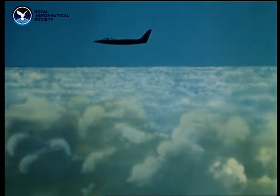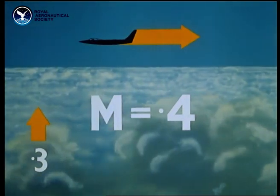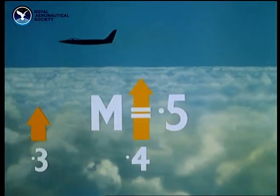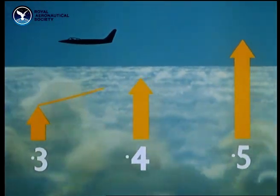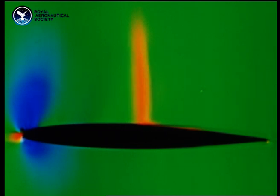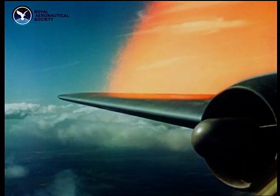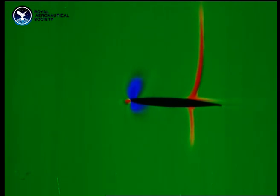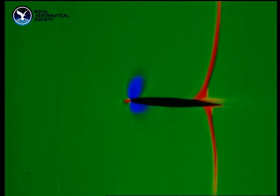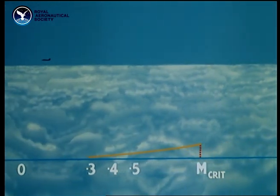The first shock stall trouble is a sharp rise in drag. At speeds below Mcrit, drag is roughly proportional to the square of the speed. But when shock waves develop, they cause a much greater rise in drag, for the energy dissipated as heat by the shock wave must be continuously supplied by the engines. This causes a new kind of drag — wave drag. As the shocks move back and grow stronger, so the wave drag grows. So once an aircraft has passed its Mcrit, its drag rises much more steeply than before.